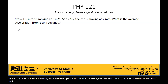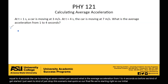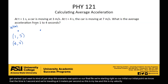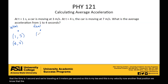Before we get started, I just want to draw out this scenario. So at our initial point, we know that the time is one second and we're traveling at three meters per second — so this is my t and this is my velocity. Now at the final position, we know that we've traveled to four seconds and we're traveling at seven meters per second — again, a time and a velocity.